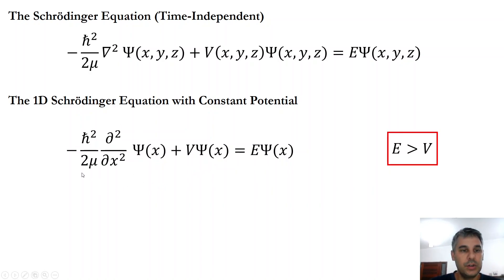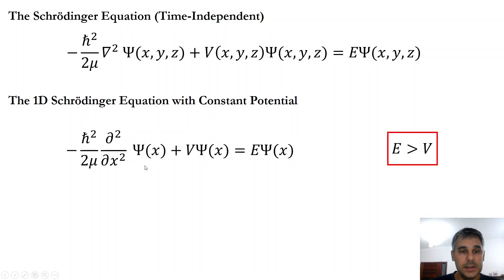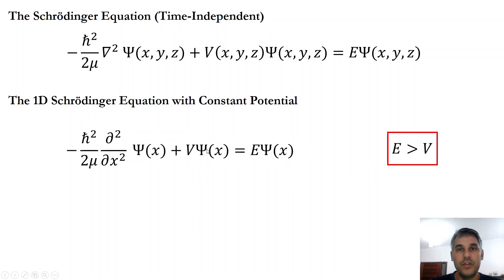The Schrödinger equation contains first a kinetic energy term that contains the second derivative of the wave function psi of x as a function of x, plus the potential energy term, equaling the total energy term. We are going to deal with a case where the potential V is a constant, which could be zero or different from zero, and we are going to focus on the case where the energy of the particle is larger than the constant potential V inside the box.